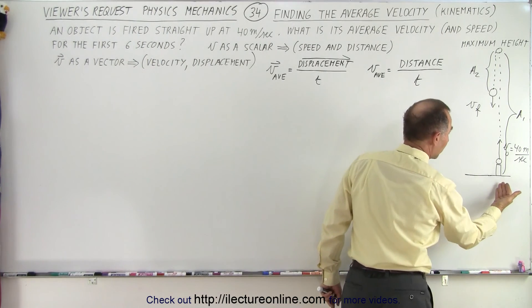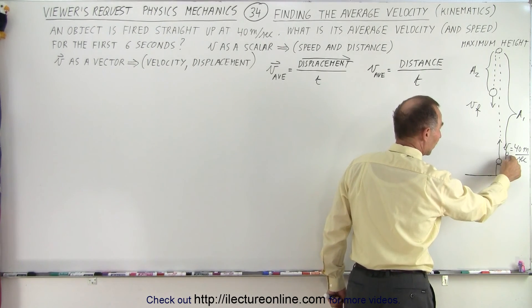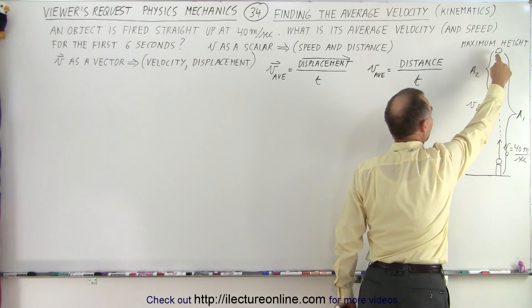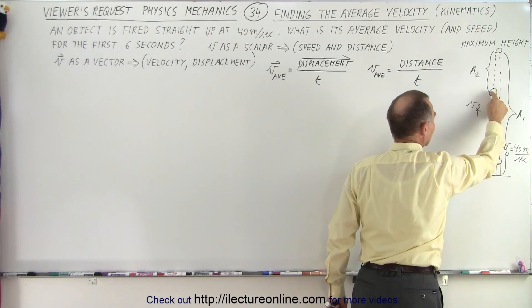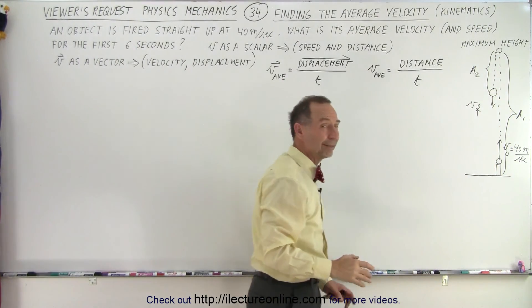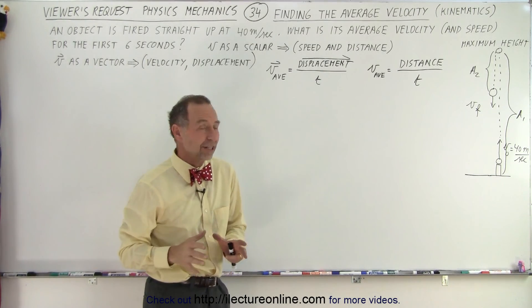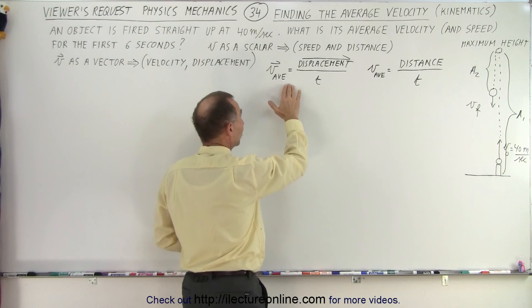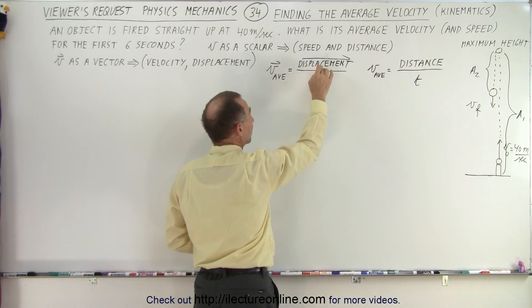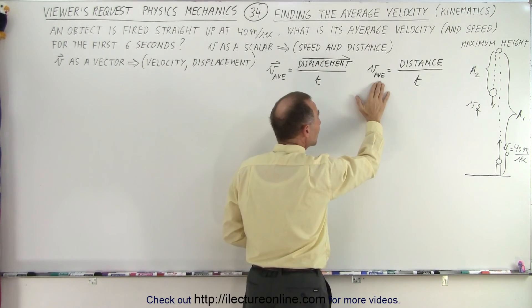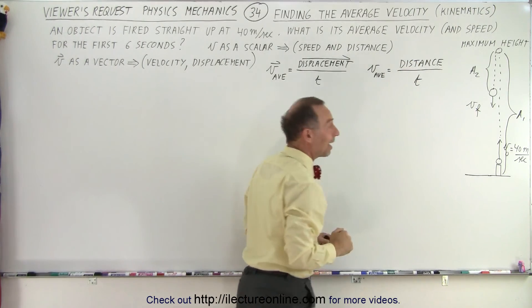We're shooting a projectile straight upward at the initial velocity of 40 meters per second. It reaches the maximum height, starts coming back down. When you get to this point right here, after six seconds, we want to calculate the average velocity. Now, we can either calculate the average velocity, which is the displacement divided by time, or we can calculate the average speed, which is the distance divided by time.